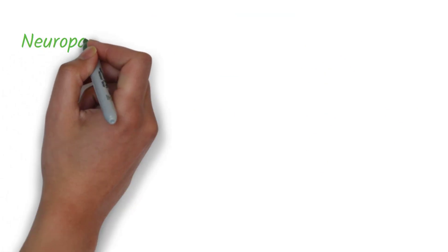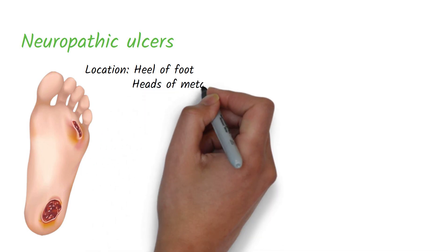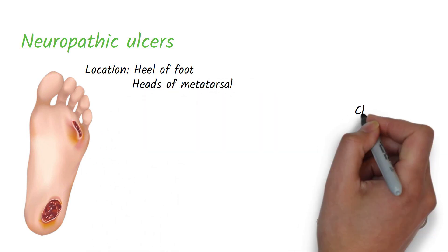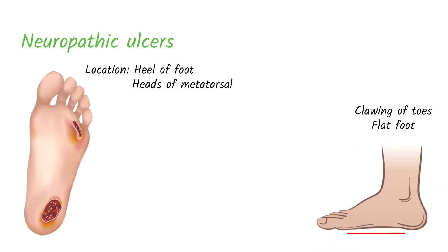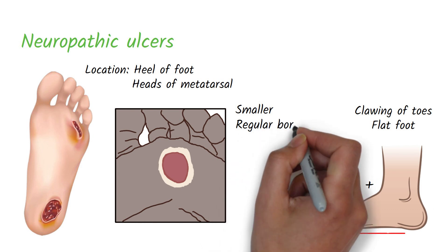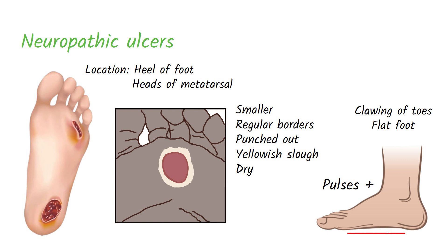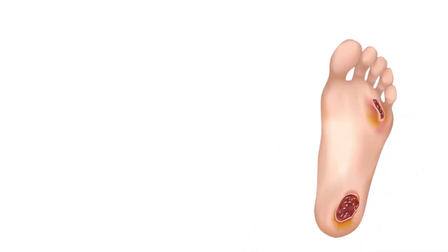Moving on to neuropathic ulcers — these are typically seen at pressure points like the heel of the foot or the head of the metatarsals. There can be clawing of toes and a flat foot due to the neuropathy. You will be able to palpate pulses in neuropathic ulcers just like venous ulcers, and skin temperature will be normal to touch. Neuropathic ulcers are smaller than venous ulcers with regular borders and punched-out edges. They are deep and penetrating with a yellowish floor and usually dry with no discharge.